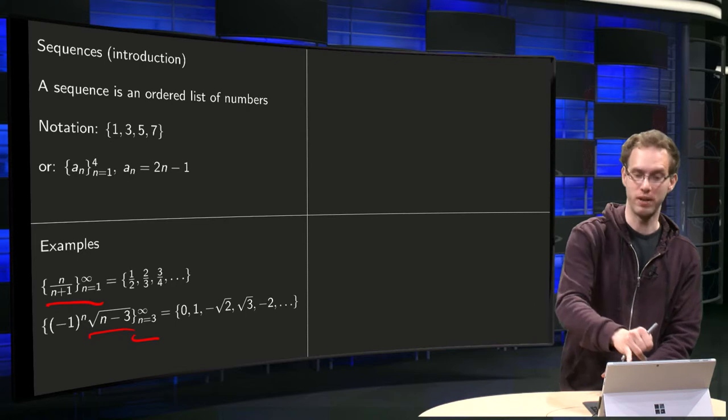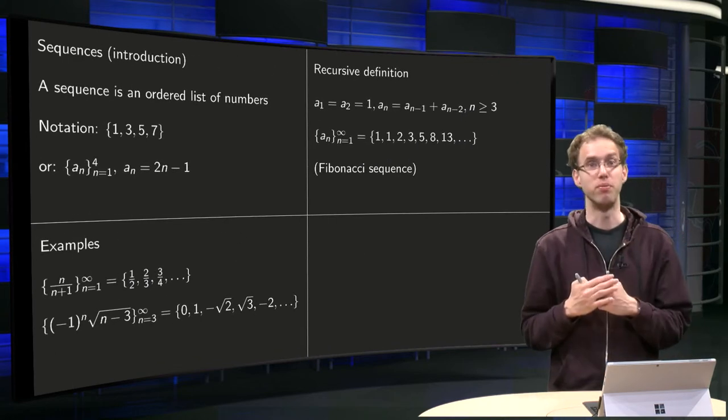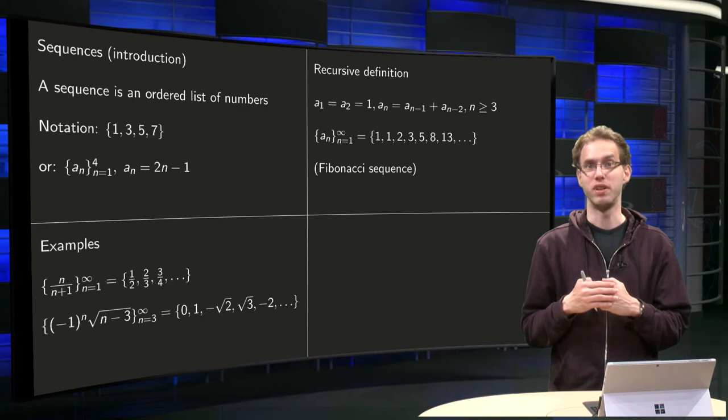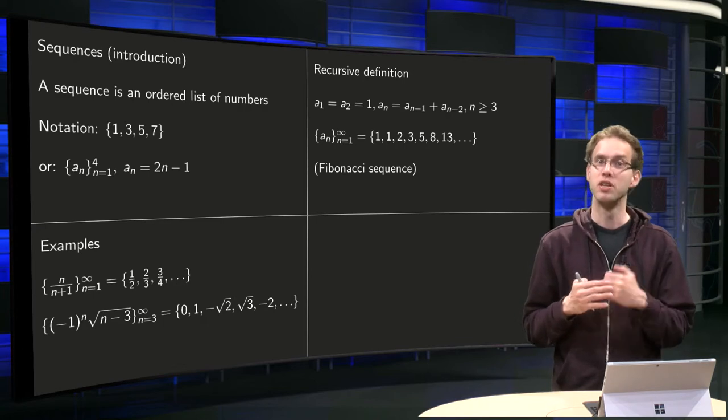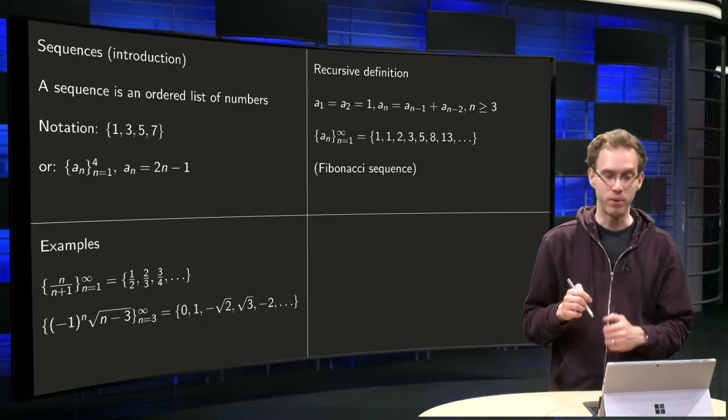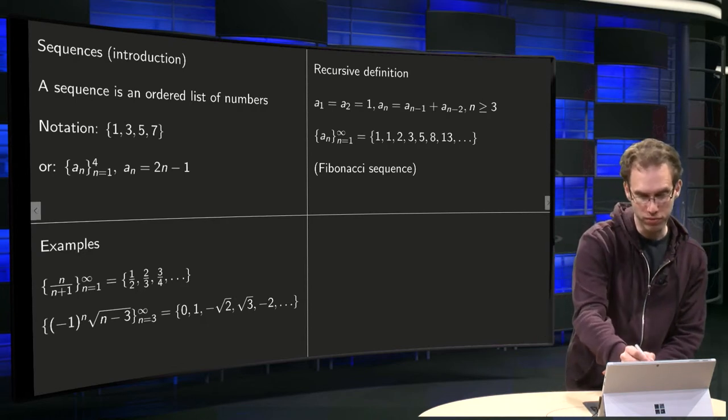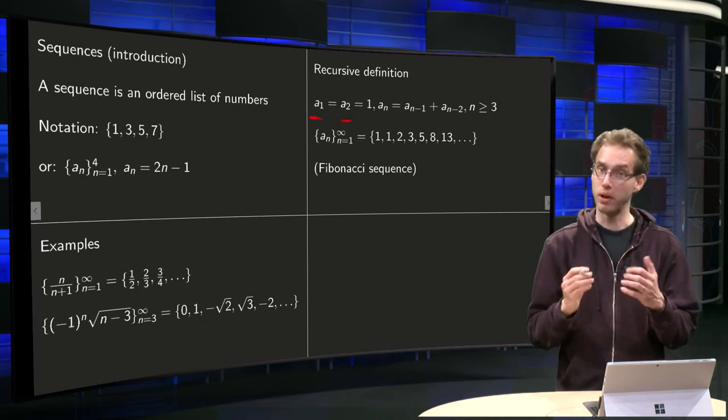Well, this is one way. Another way, which is more familiar to you, is a recursive definition of the elements of a sequence. So how is that? Well, we specify, for example, the first two elements of the sequence, a_1 and a_2.